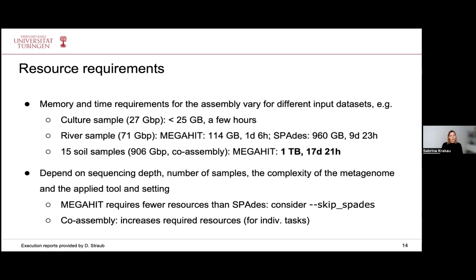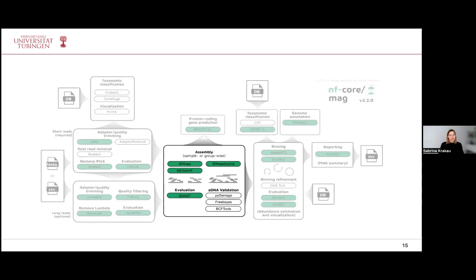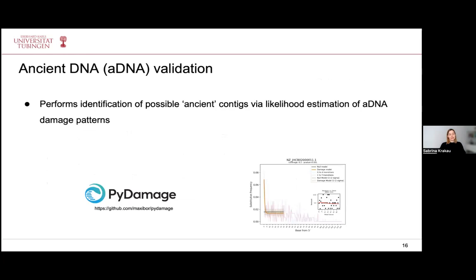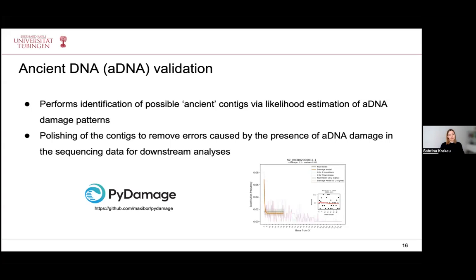We've seen how to run the nf-core MAG pipeline for modern metagenomic datasets. As mentioned, it can also handle ancient DNA. James and Maxime added an ancient DNA validation sub-workflow, which is particularly interesting because as far as we know, no other such pipeline handles ancient DNA. It essentially performs identification of possible ancient contigs by modeling ancient DNA damage patterns, then polishes the contigs to remove errors caused by such damage, allowing more unimpaired downstream analysis.